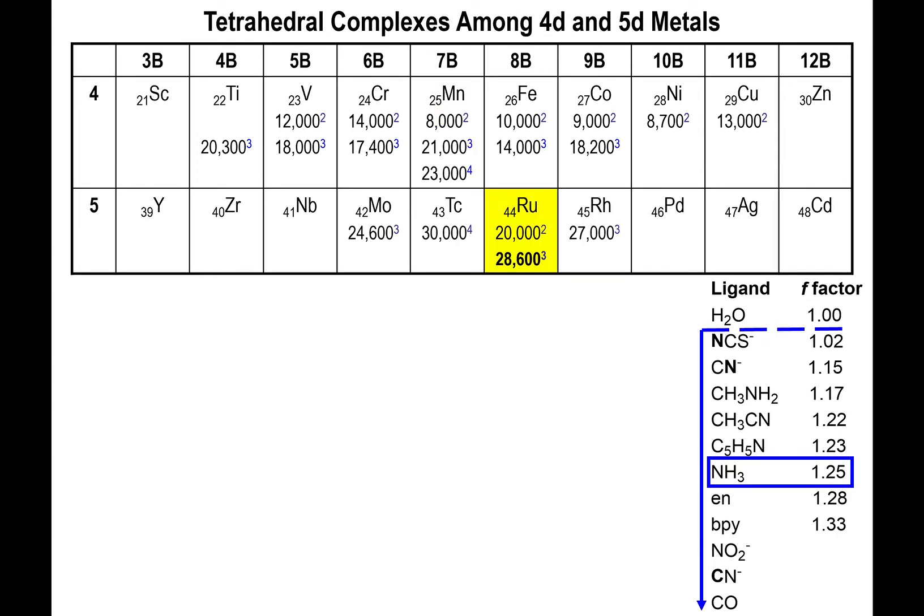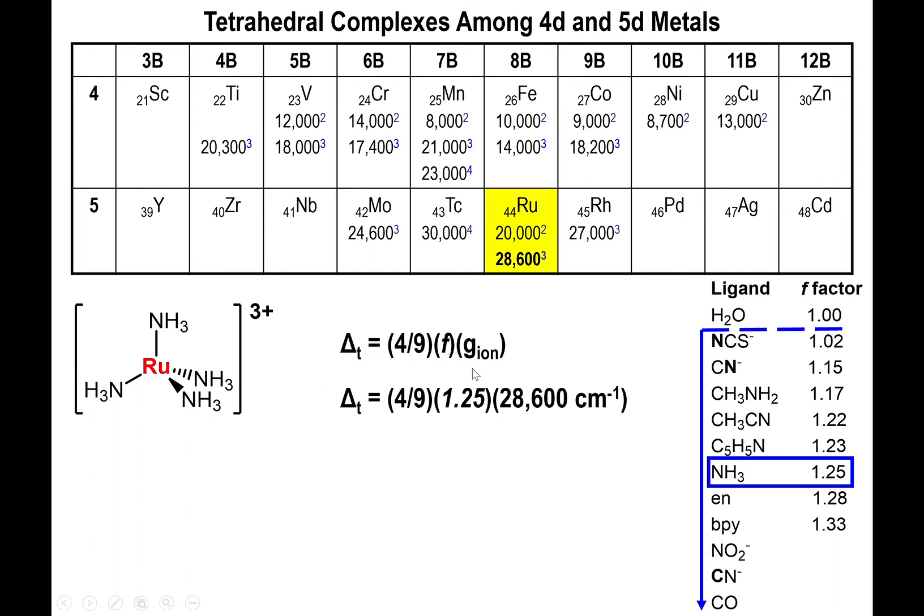Case in point: ruthenium. Let's see 28,600. If we use the amine ligand and have a tetrahedral structure, we multiply four ninths by F times G ion. The G ion is 28,600 for ruthenium 3 plus. The F factor for amine is 1.25. Multiplying that by four ninths gives us a value above 13,000.